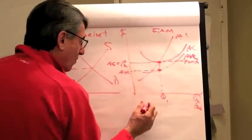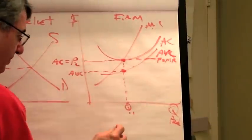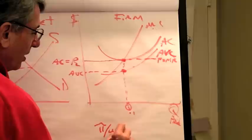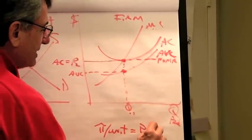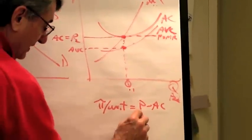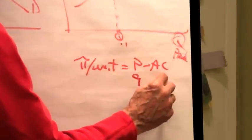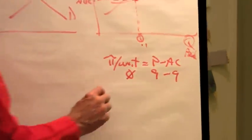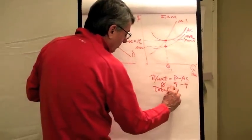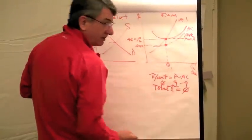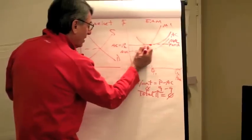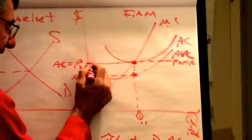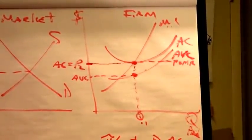That's the quantity and that's the price. Profit per unit equals price minus average cost. If the price is $9 and the average cost is $9, the profit on each unit is zero, and total profit will be zero also. Right at the minimum average cost, if the price is that price, then the profit will be zero.